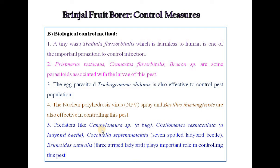Predators also play an important role in controlling brinjal fruit borer. These include Campyloneura species, which is a bug; Chylominus species, which is a ladybird beetle; Coccinella species, which is a seven-spotted ladybird beetle; and Bromoida species, which is a three-striped ladybird beetle.